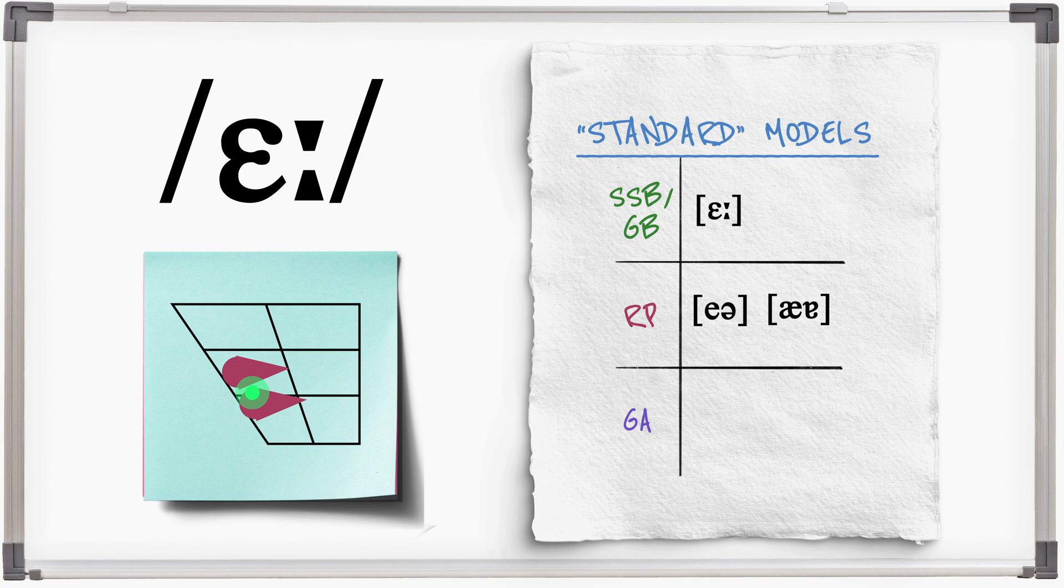Since the sound is always spelt with R, the general American pronunciation includes this, so air, bear.